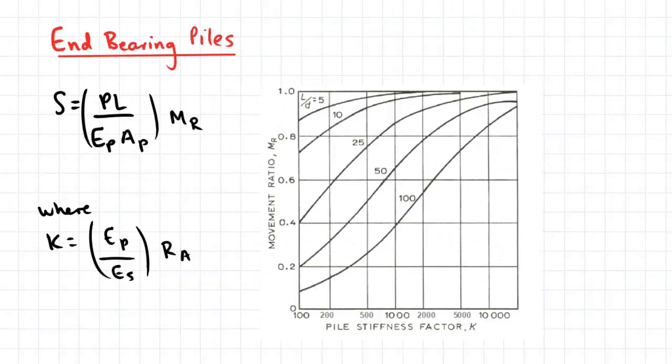The settlement of end bearing piles is given by this expression here, where MR is the moment ratio. MR can be found using this chart below, where you need to first determine K and LD to get a value for MR.